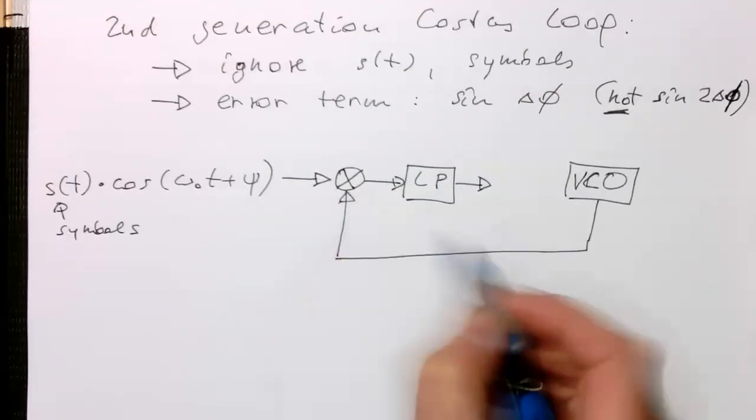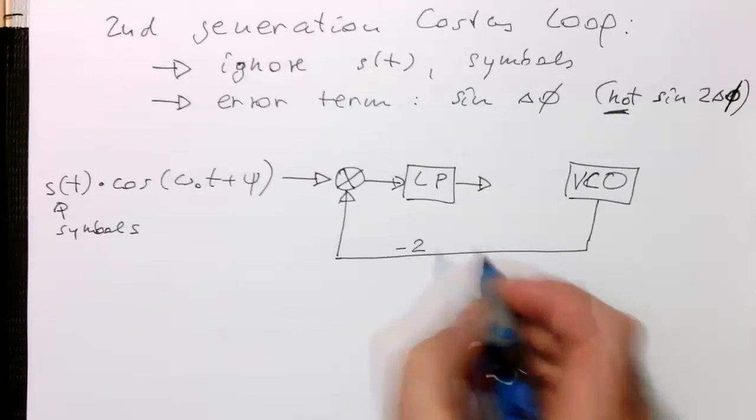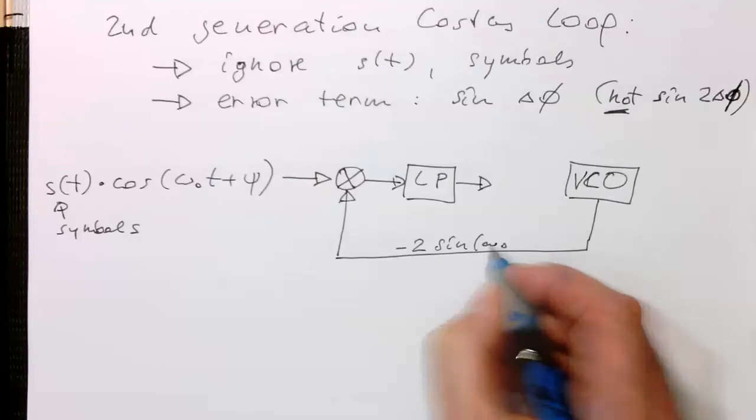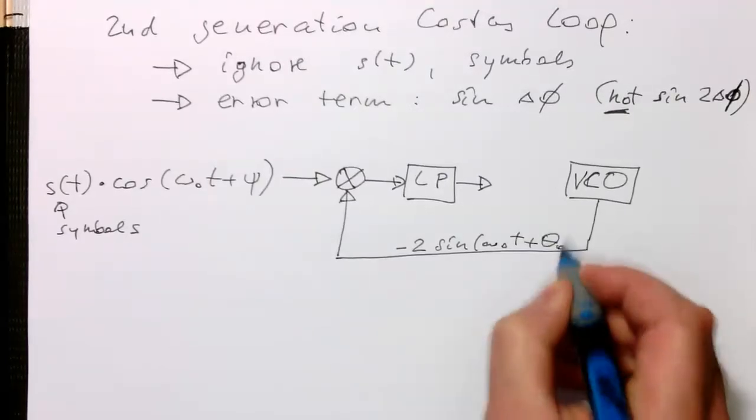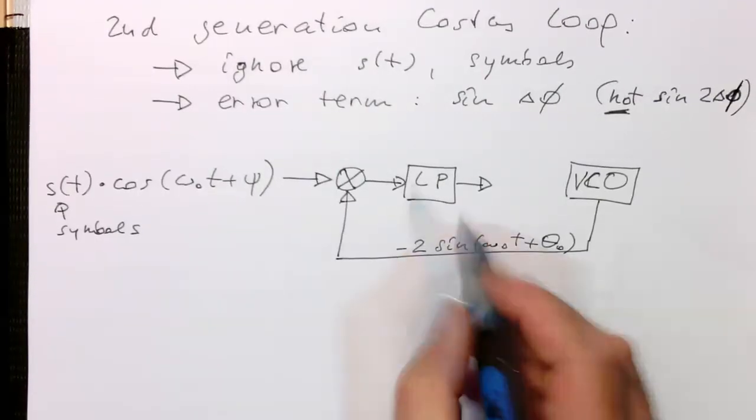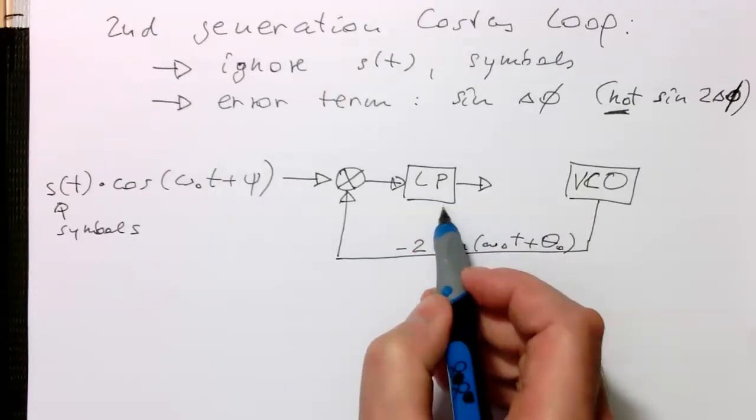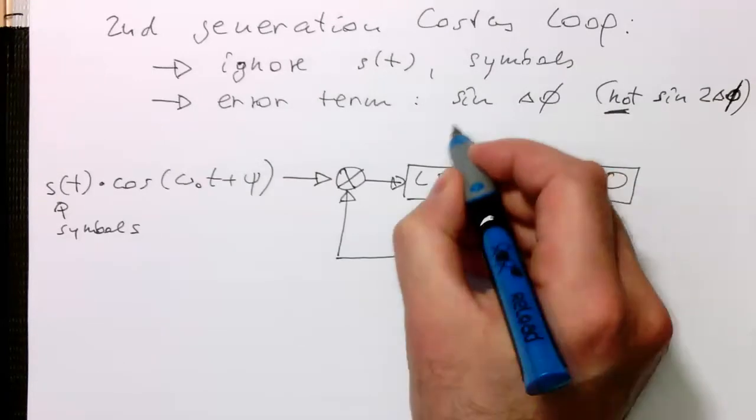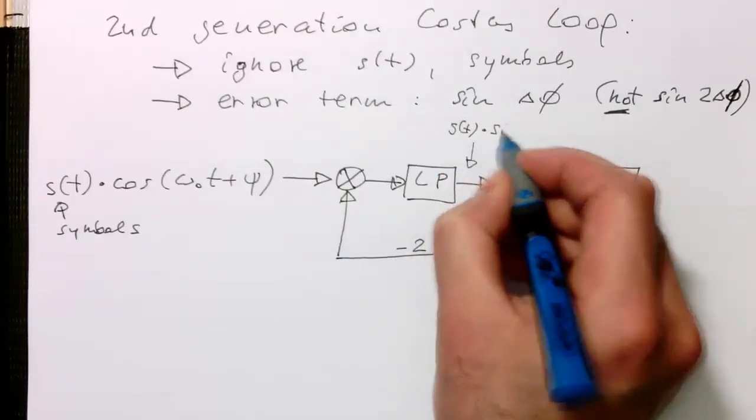And then the VCO output feeds into our multiplier and performs the phase comparison. We feed in there our sine of omega zero T plus our theta zero. That's the angle, the phase angle of the VCO. So now I've left this gap there. The question is now, how can we eliminate our S of T at this point here?